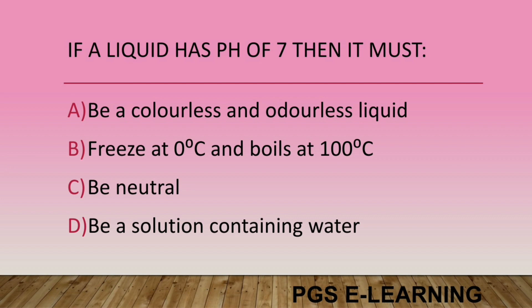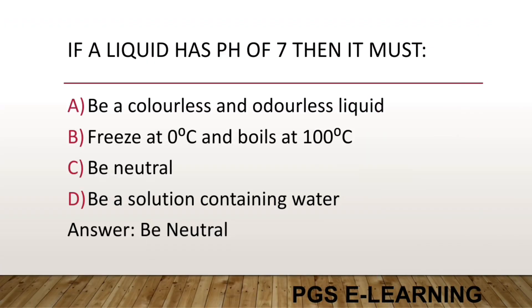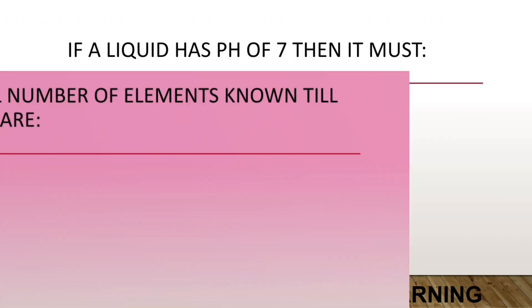If a liquid has a pH of 7, then it must be: Option A, a colorless liquid. Option B, freeze at 0°C and boil at 100°C. Option C, neutral. Option D, a solution containing water. Correct answer is neutral.